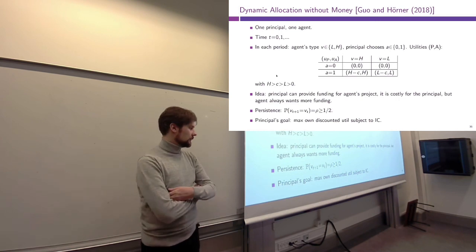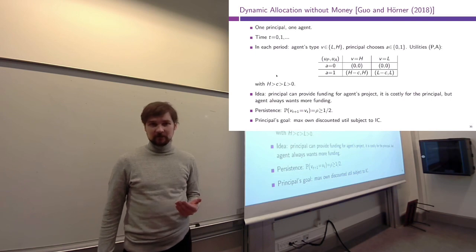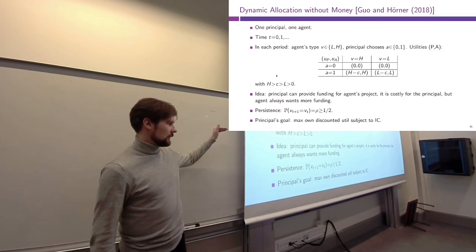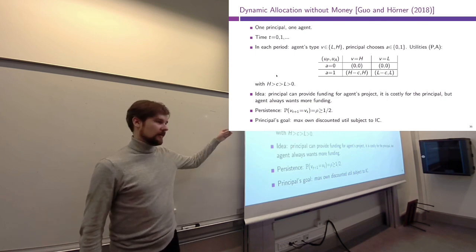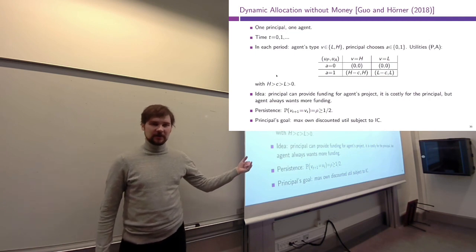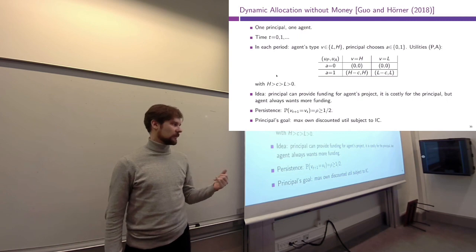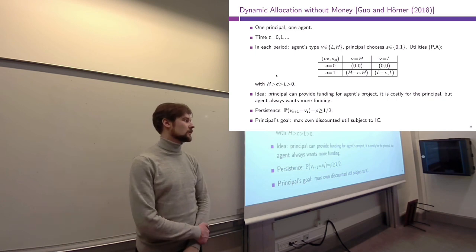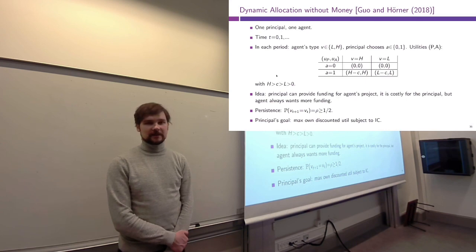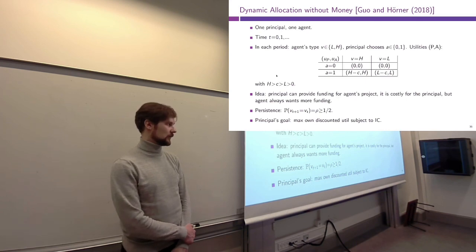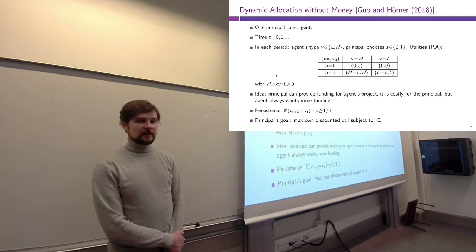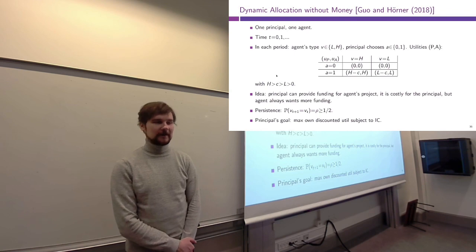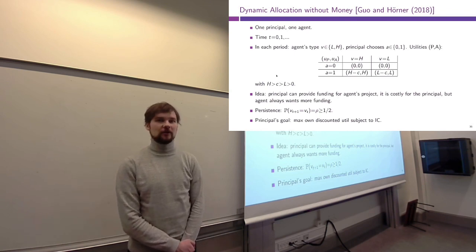Further assumptions: the agent's type is random and can change over time, but the process features persistence. Specifically, there is some probability ρ greater than one half that the type of project in the next period will be the same as in the current period, and with probability 1 − ρ (less than one half) the type switches. The principal's goal is standard — maximize their own expected utility net of funding costs, subject to the incentive compatibility constraint for the agent, since the principal cannot distinguish high-value from low-value projects.